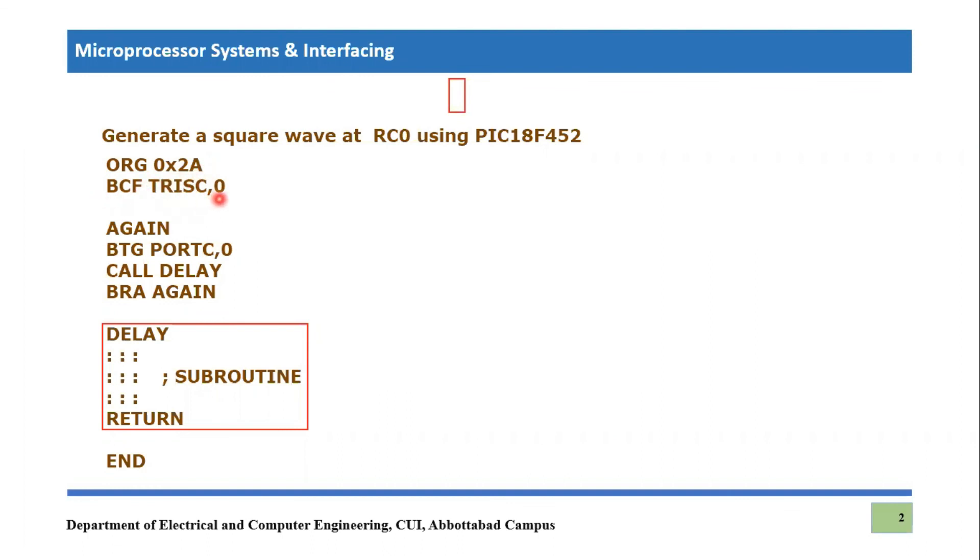Then we write BCF TRISC,0. BCF is the bit manipulation instruction we have learned in the last lecture. BCF will clear the file register at a specific bit. So what file register? TRISC and its zeroth pin. That means zeroth pin of port C would become output because we are providing TRISC zero, right?